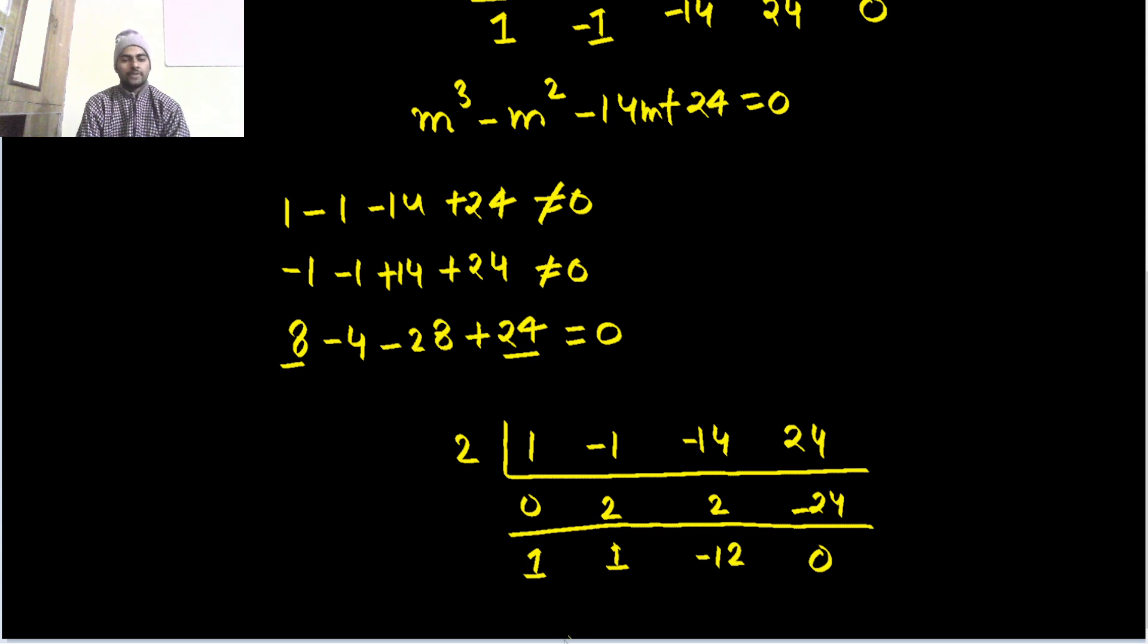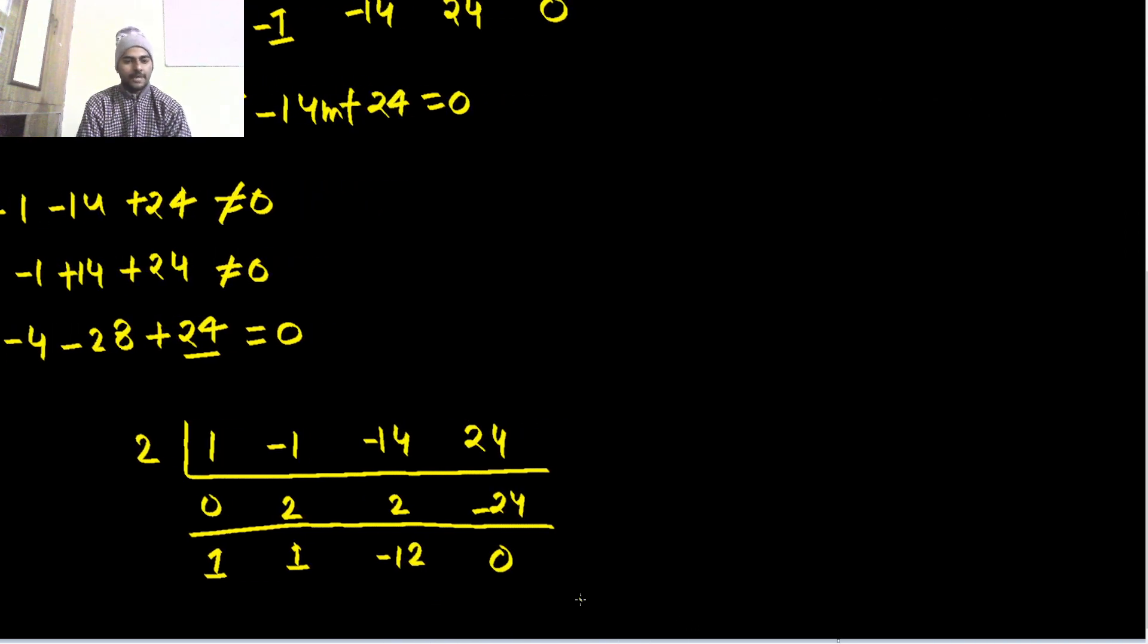Now you get a quadratic by multiplying these coefficients by the powers: M^2 + M - 12 = 0. Can you factorize this? M^2 + 4M - 3M - 12 = 0.